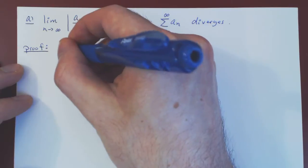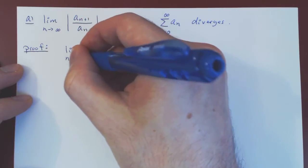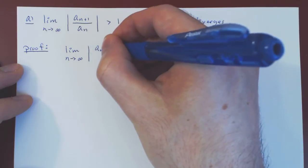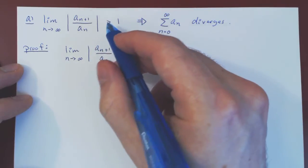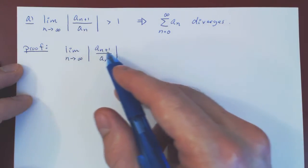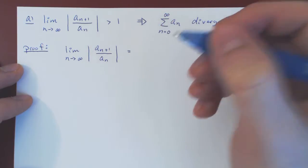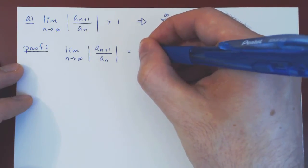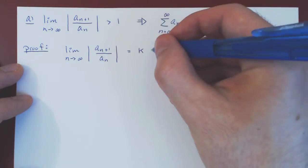We have, by assumption — and as our only assumption — that the limit of |a_{n+1} / a_n| is strictly larger than 1. Suppose that the value of this limit equals k, where k is some real value larger than 1.